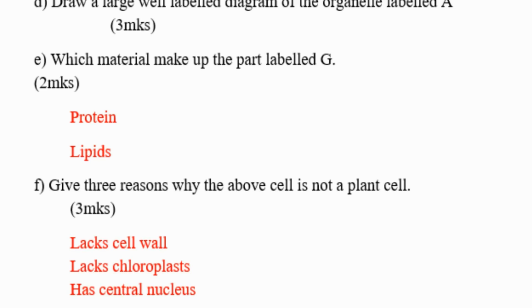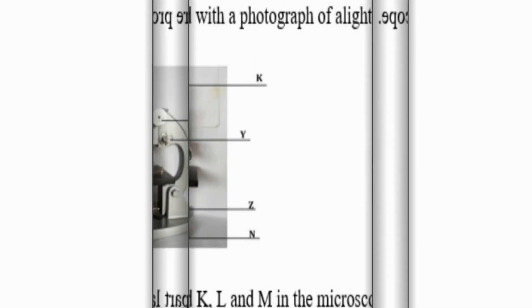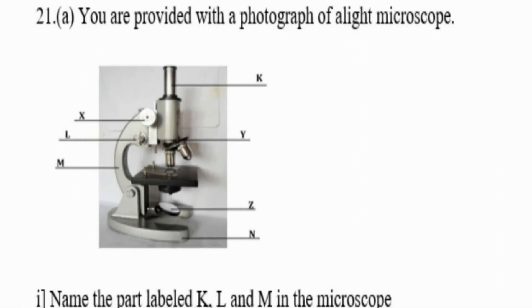Why do we say that? One: lacks cell wall. Number two: it does not have chloroplasts. Number three: it has central nucleus. You realize that in the plant cell, nucleus is at the side. We move to the next question, which is a photograph of a light microscope.